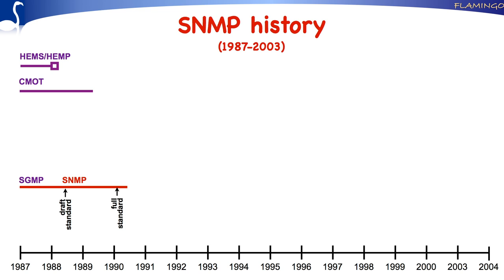Around the same time, the related SMI and MIB2 definitions also got accepted as full Internet standards. Work on CMOD, however, progressed slower, also since collaboration with the responsible ISO OSI working group was needed. CMOD became proposed standard in October 1990.